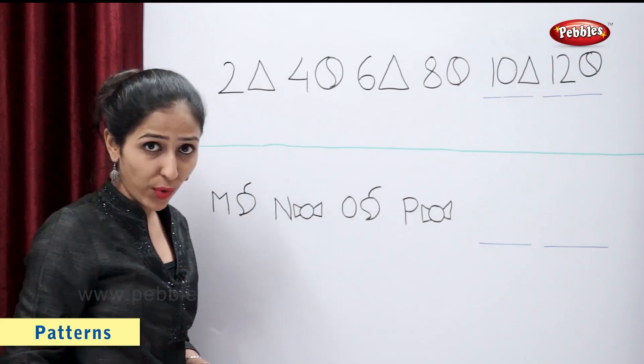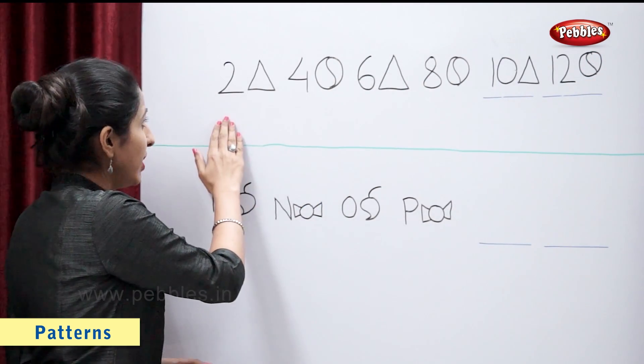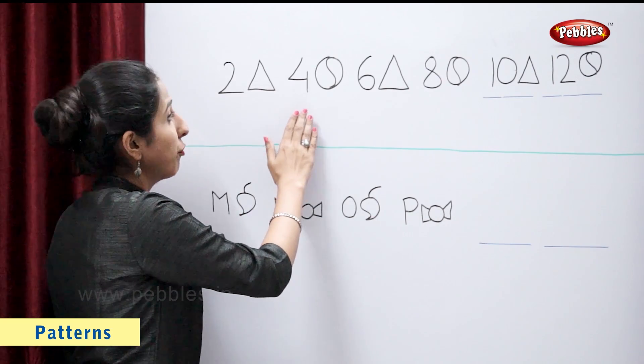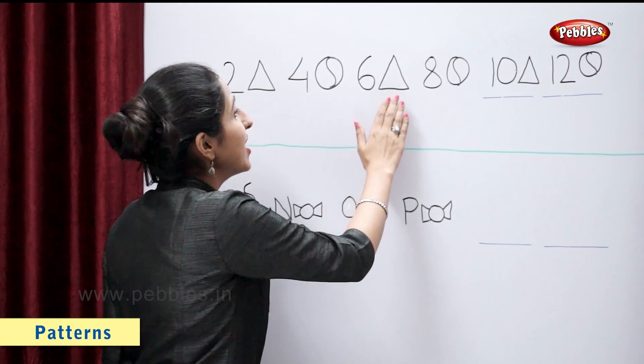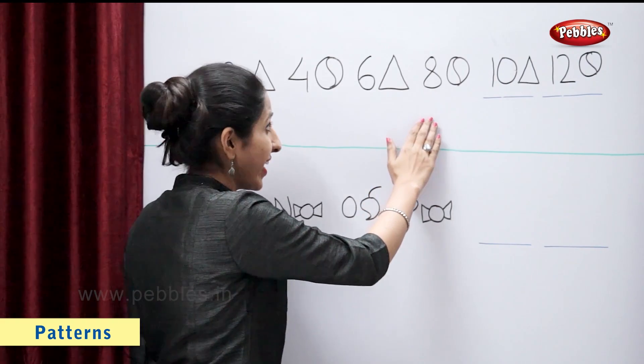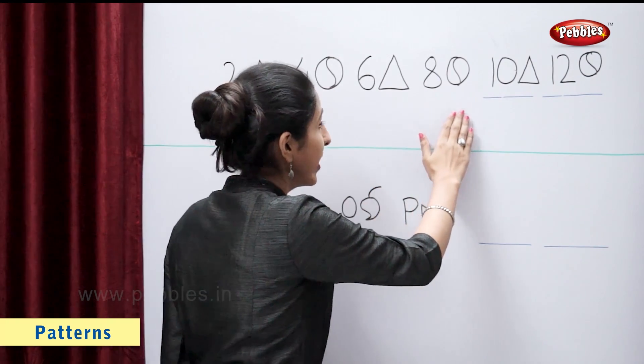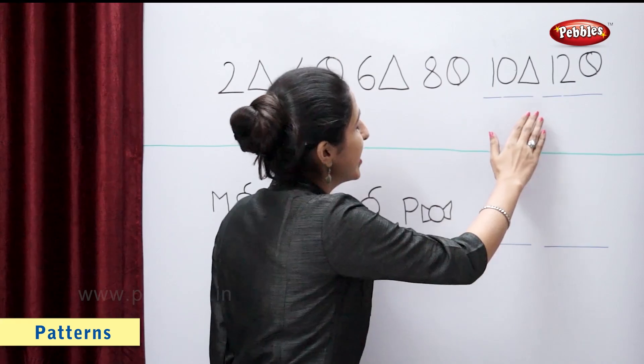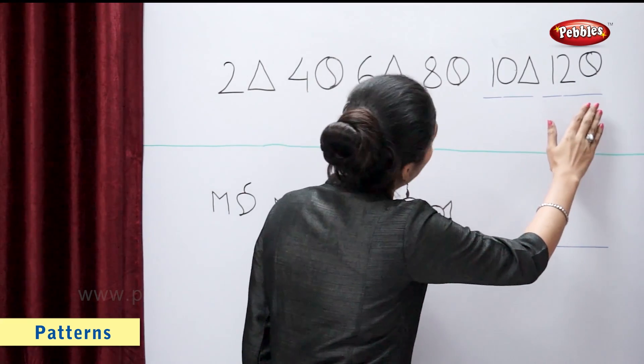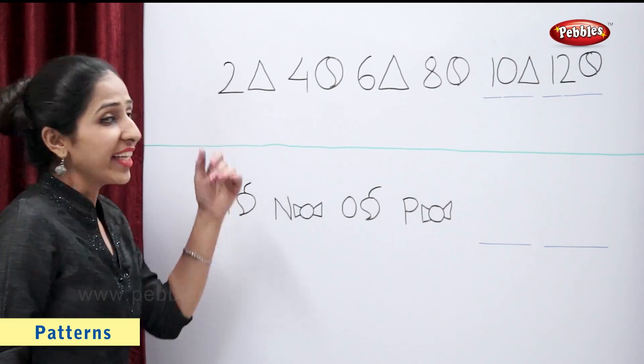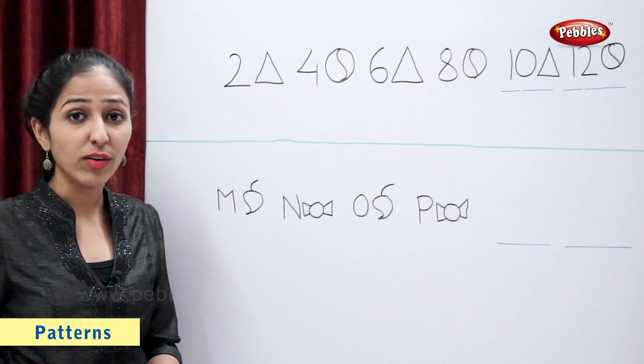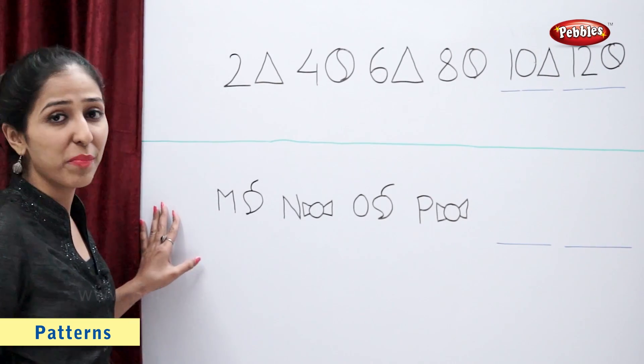So, 2 triangle, 4 ball, 6 triangle, 8 ball, 10 triangle, 12 ball. So this is a complete pattern. Now let's solve this example.